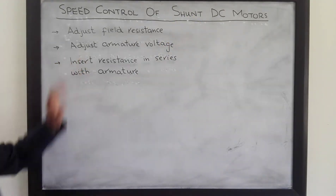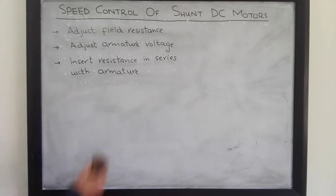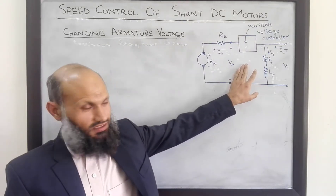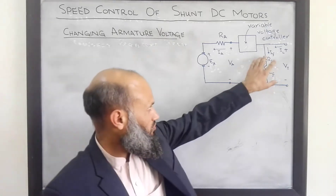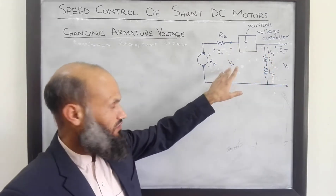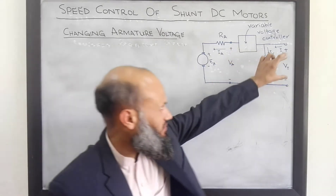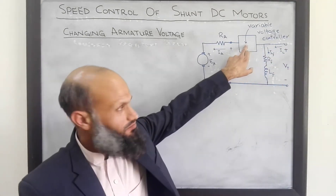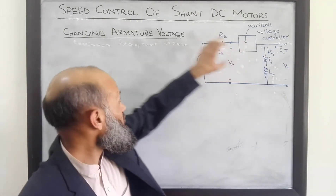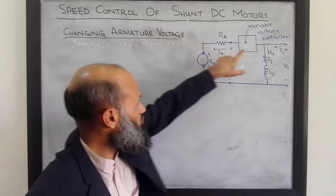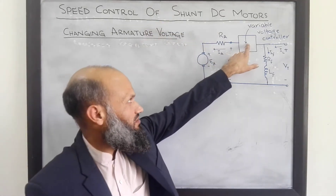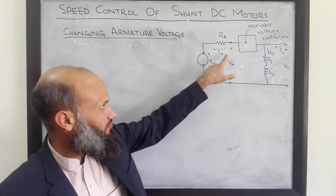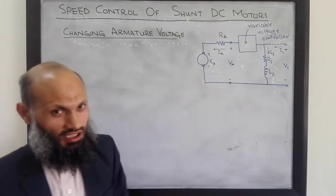We start with the second approach. Here is the equivalent electrical circuit of a shunt DC motor, where both the field winding and armature winding are excited by the same voltage source. To control the speed by this approach, there is an electronic circuitry which can change the voltage applied to the armature circuit.